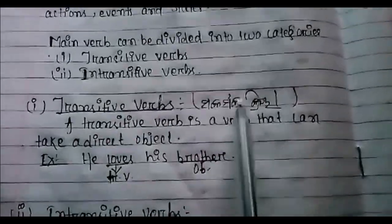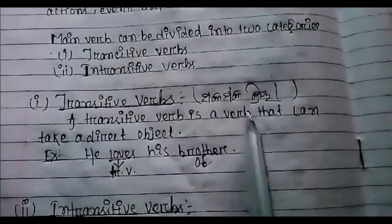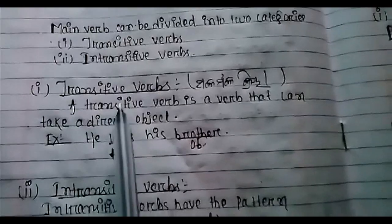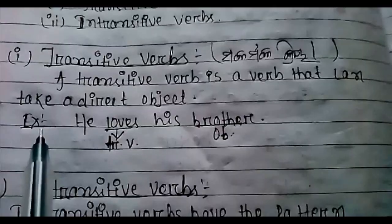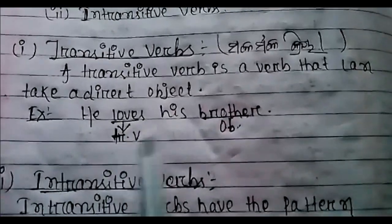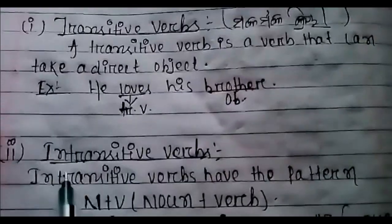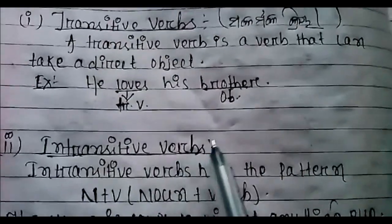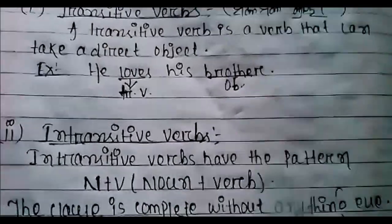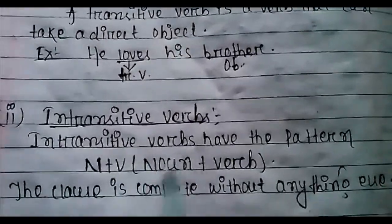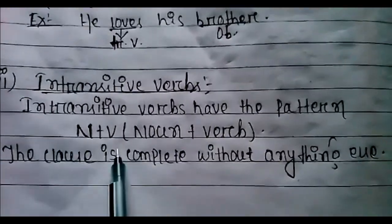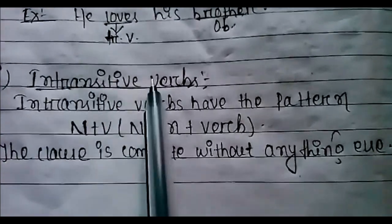A transitive verb is a verb that can take a direct object. The pattern is N plus V, meaning noun plus verb. The clause is complete without anything else, meaning the verb has no object, so it is a transitive verb.